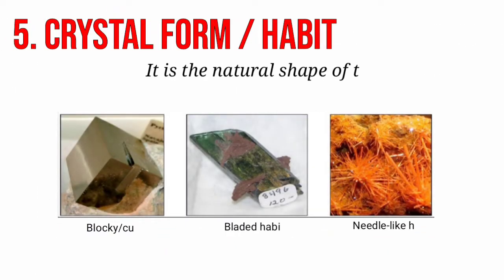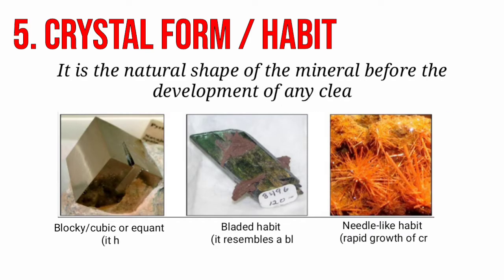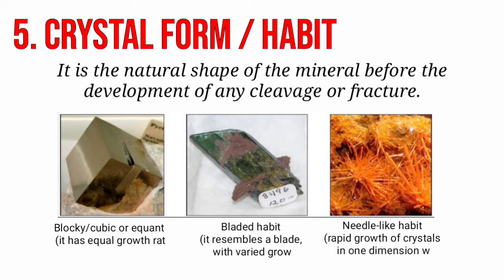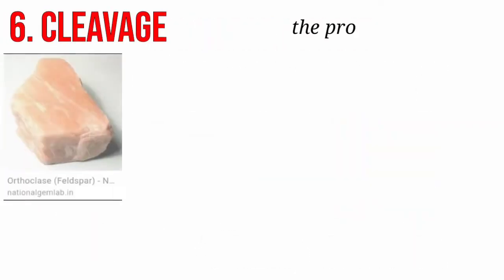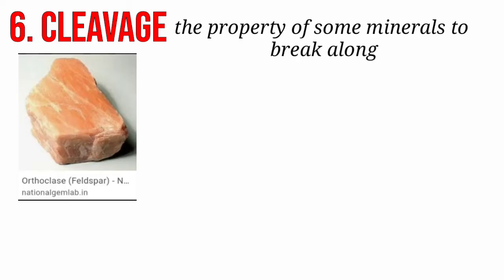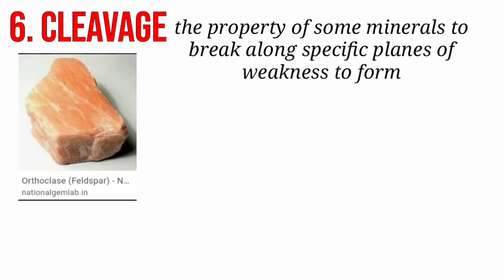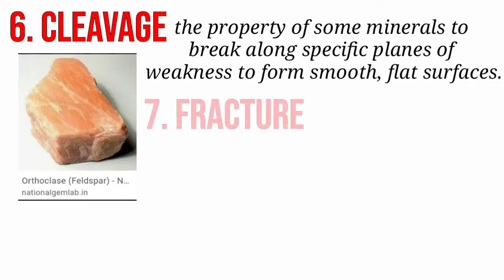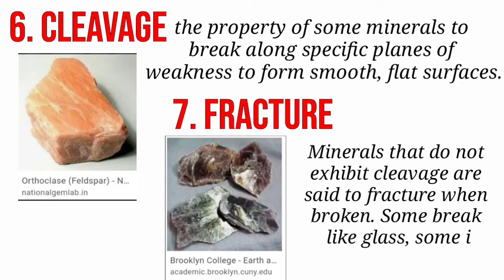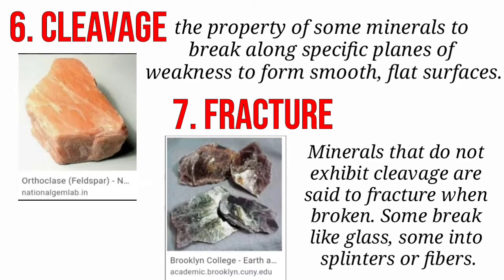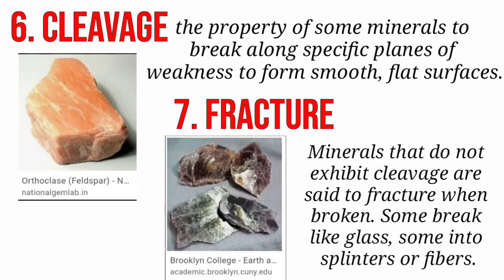Next is the crystal form or habit. It is the natural shape of the mineral before the development of any cleavage or fracture. We also have cleavage — the property of some minerals to break along specific planes of weakness to form smooth, flat surfaces. Minerals that do not exhibit cleavage are said to fracture when broken; some break like glass, some into splinters or fibers.